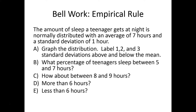Hey everyone, today we're going to be talking about 7.2, which is really kind of from chapter 11 in your book. It's going to have to do with more about normal distributions and finding probabilities that aren't necessarily nice values like we use the empirical rule for. But we're going to start with bellwork, where you actually are using the empirical rule.